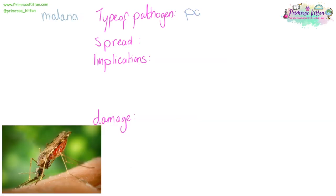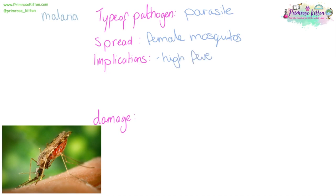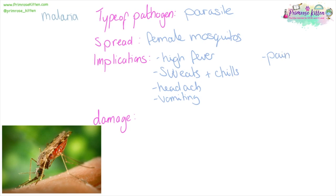Malaria is a parasite, spread by female mosquitoes. The implications are going to be a high fever, sweats, chills, headache, vomiting, chest and muscle pains, and diarrhea. This can be lethal in severe cases.